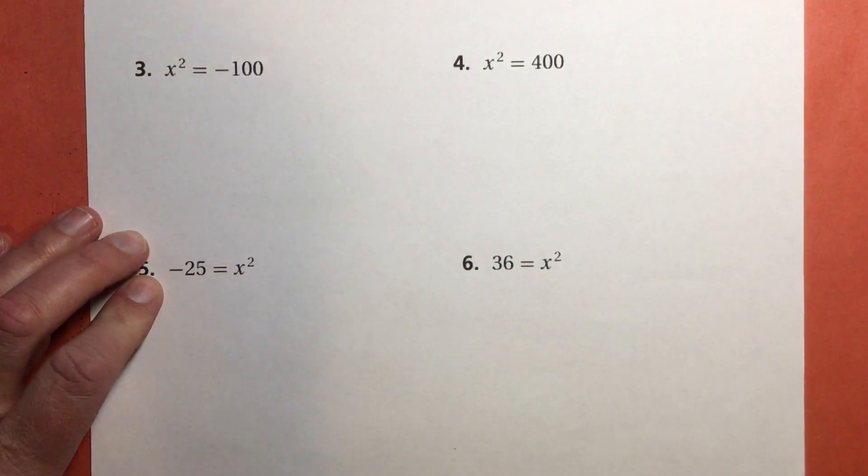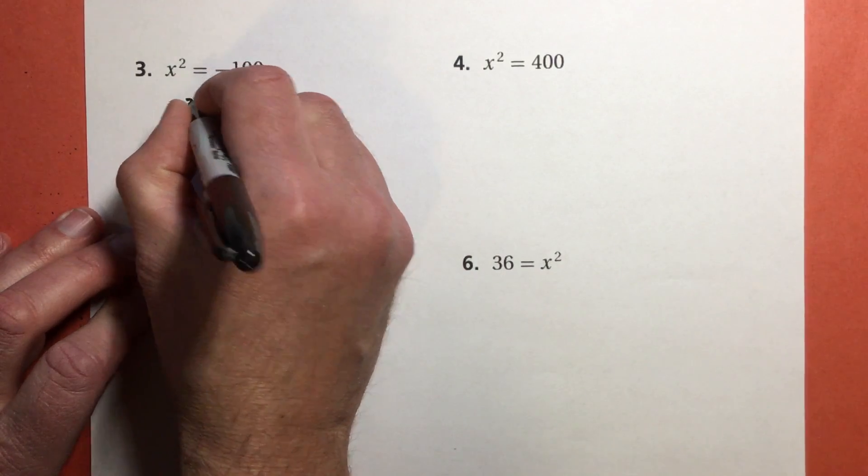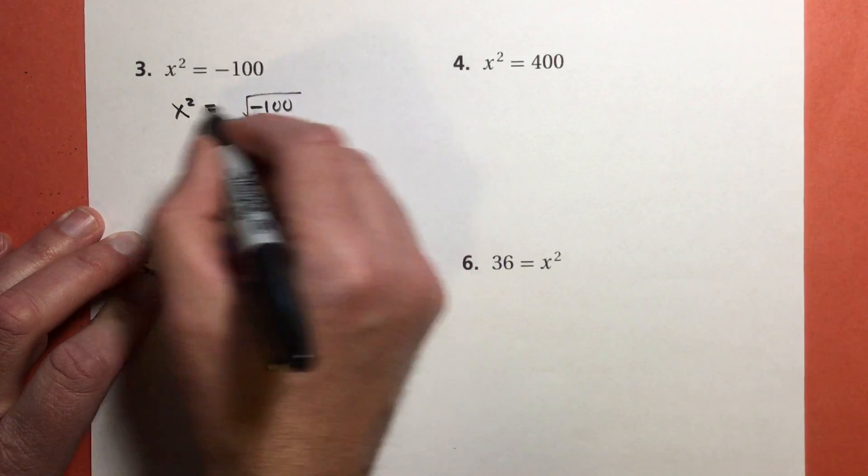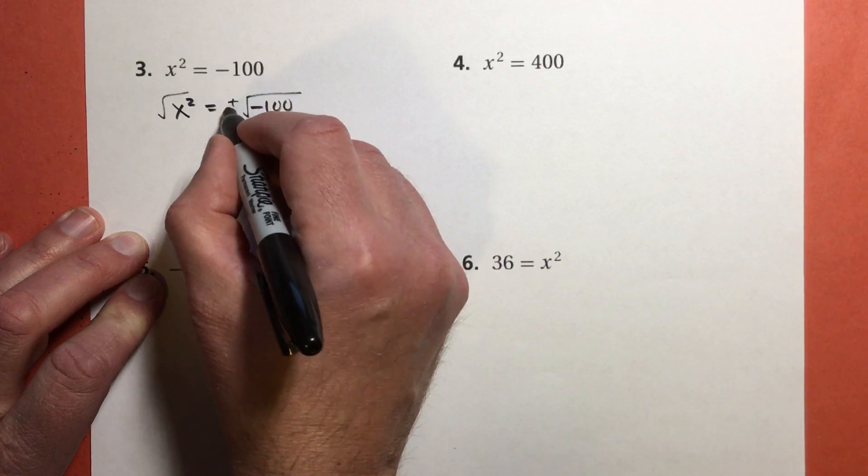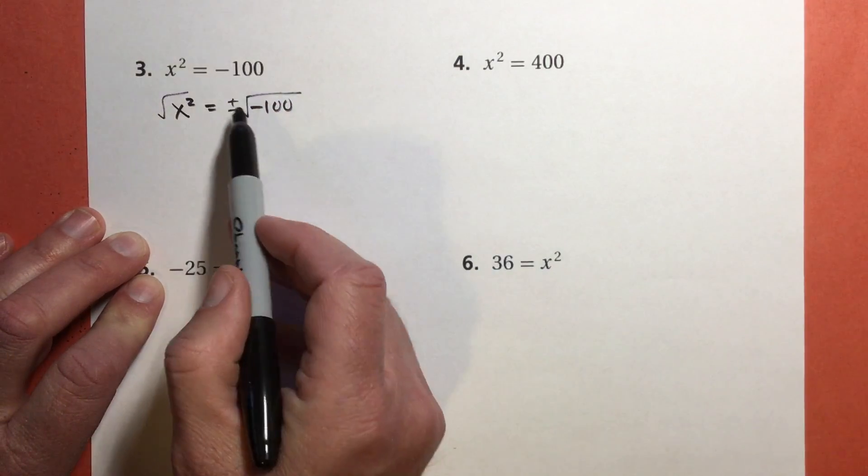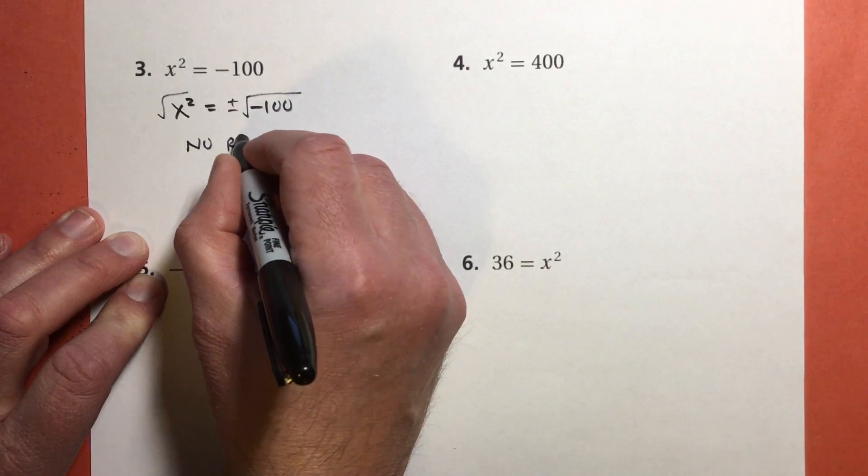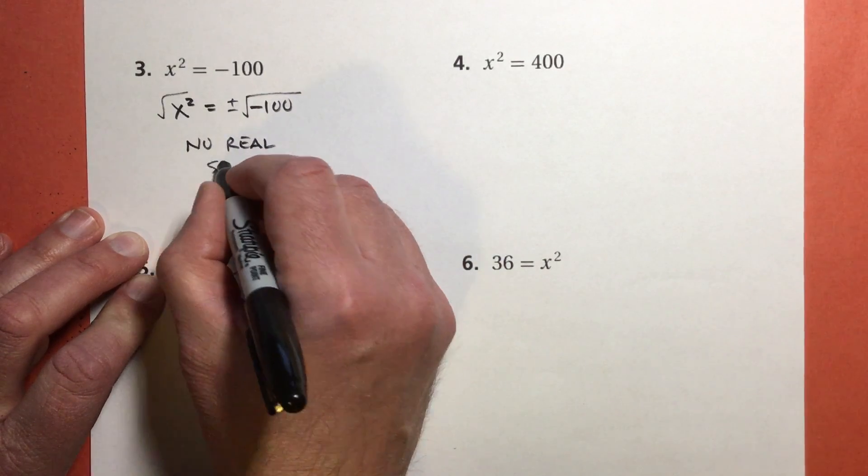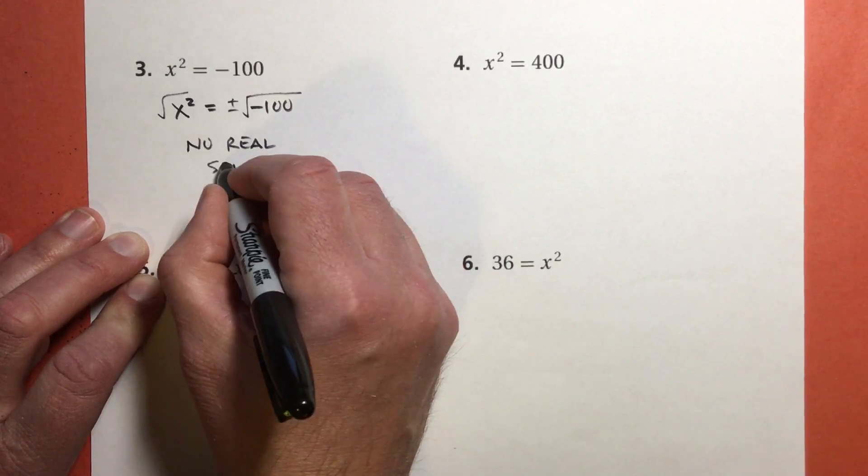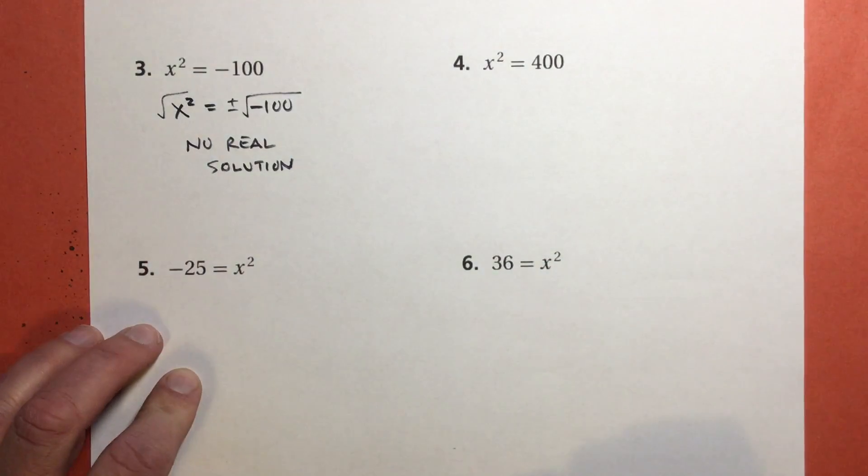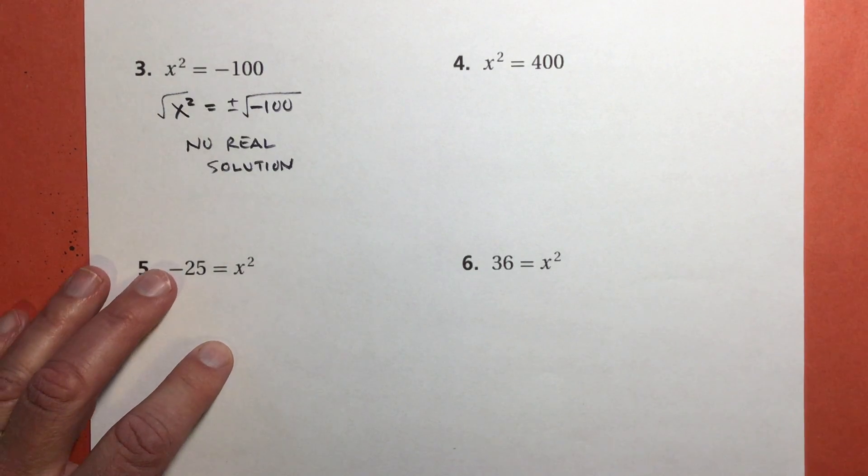Alright, let's look at problem number 3. I have x² = -100. I gave myself some space because I'm going to need a square root and I'm going to need to put a plus or minus in there. When I take the square root of a negative number, you just say, No real solution. And of course, that implies that there is a solution that our vocabulary fails us. We say it's not real. And that's true. We'll get to that later.